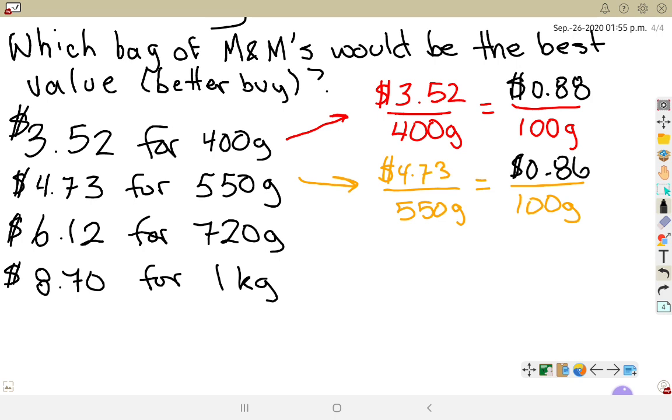Even just comparing these two, even though the one that costs $4.73 is more expensive overall, it weighs more than the other. If we compare how much it costs for 100 grams, the second bag is $0.02 cheaper for 100 grams than the first bag.